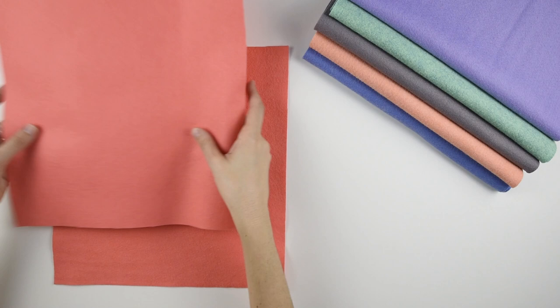I'll make a list of all the supplies along with links in the description below. To make this beret you'll need some felt. I'm using a non-woven wool blend. Here I've cut two 12 inch square pieces.